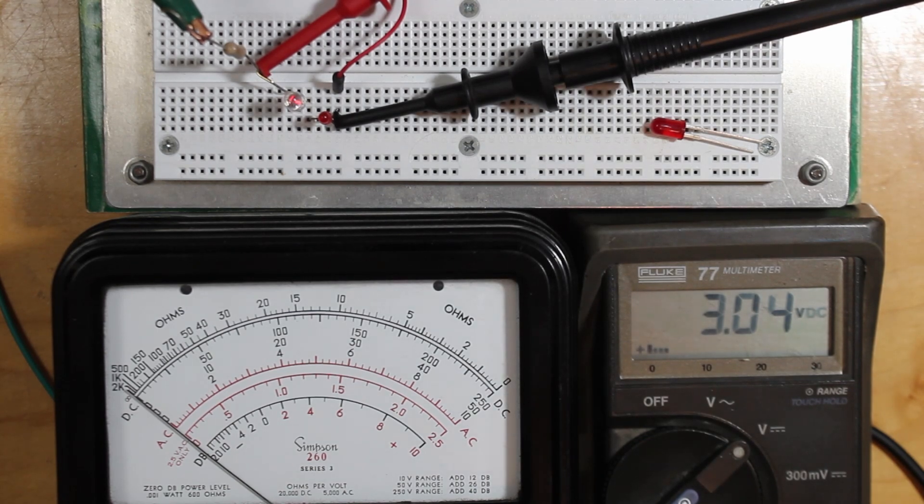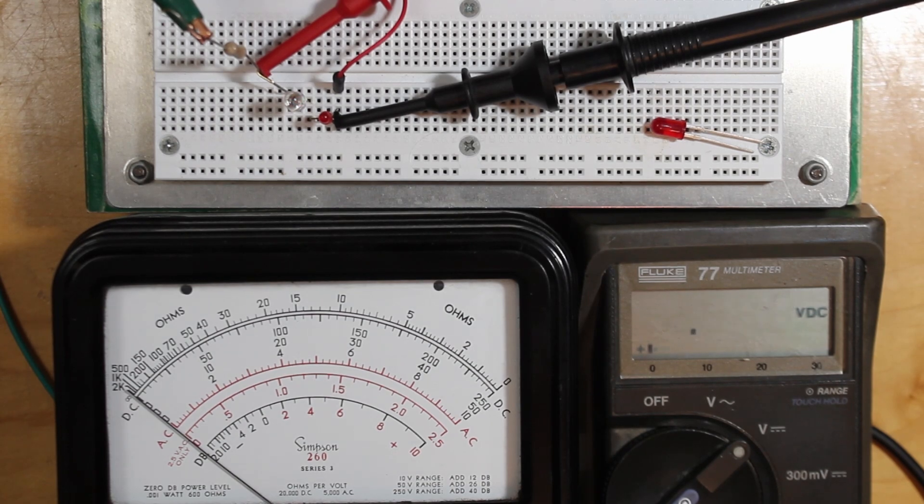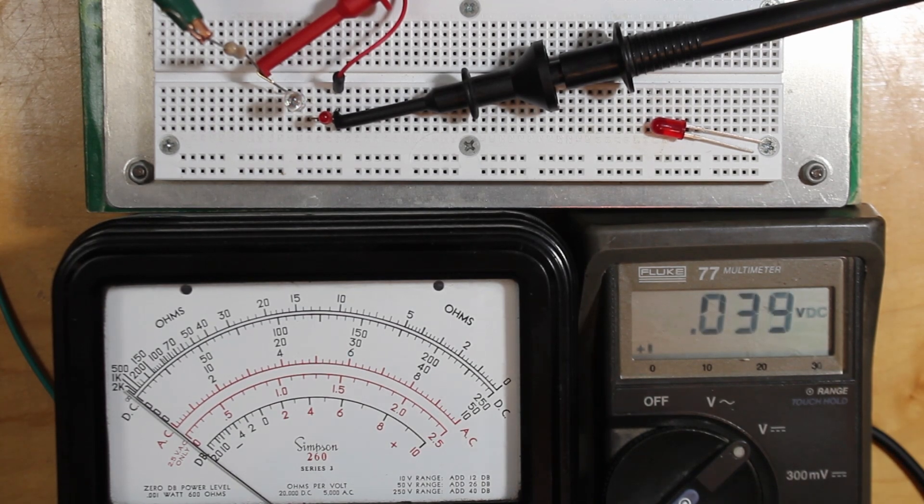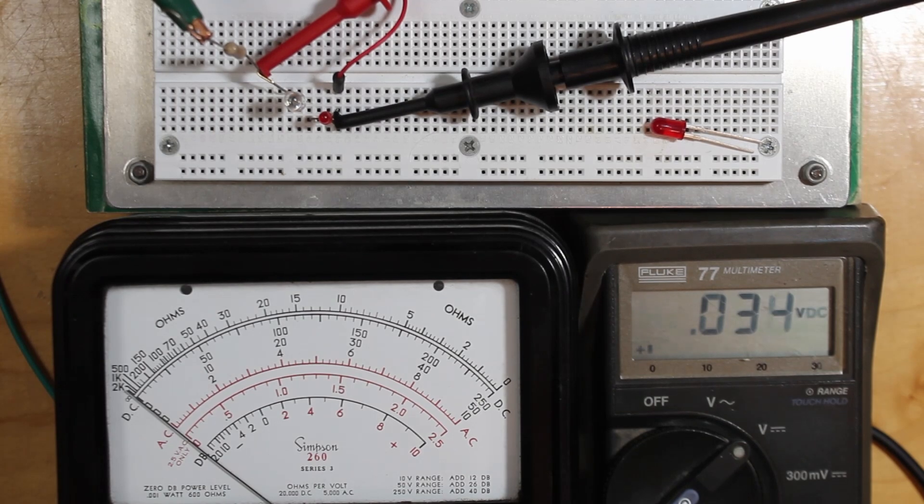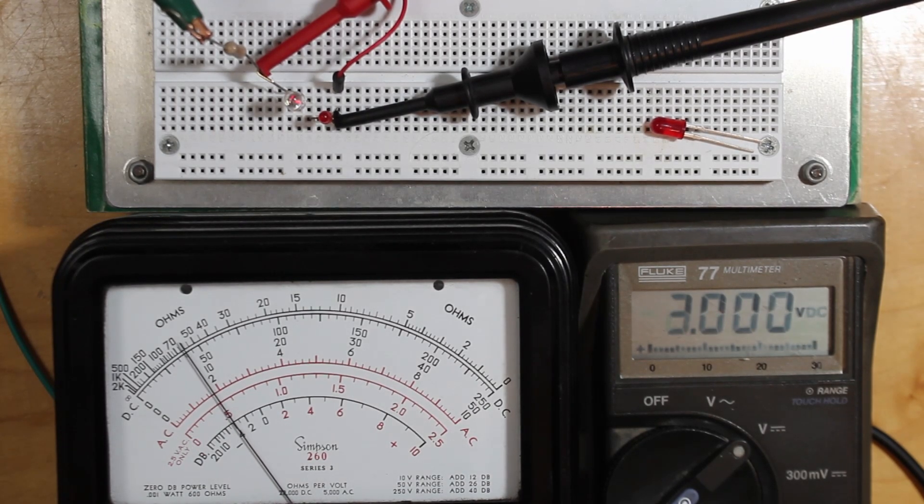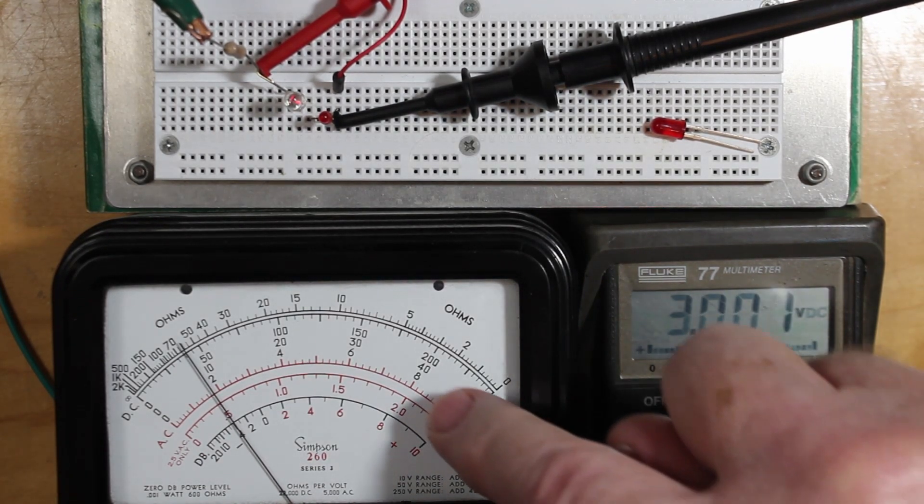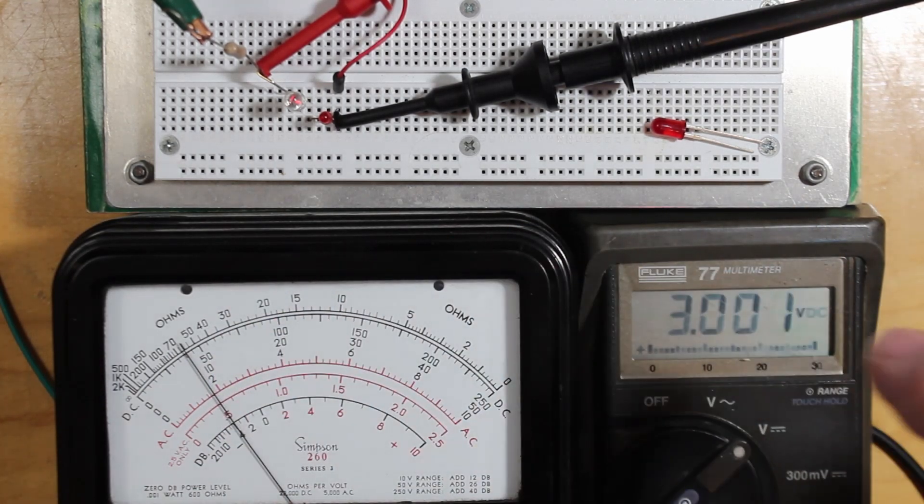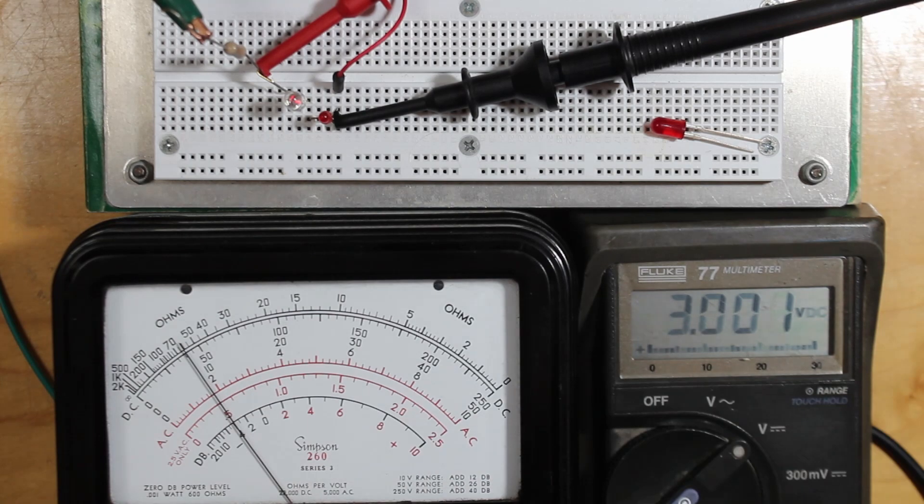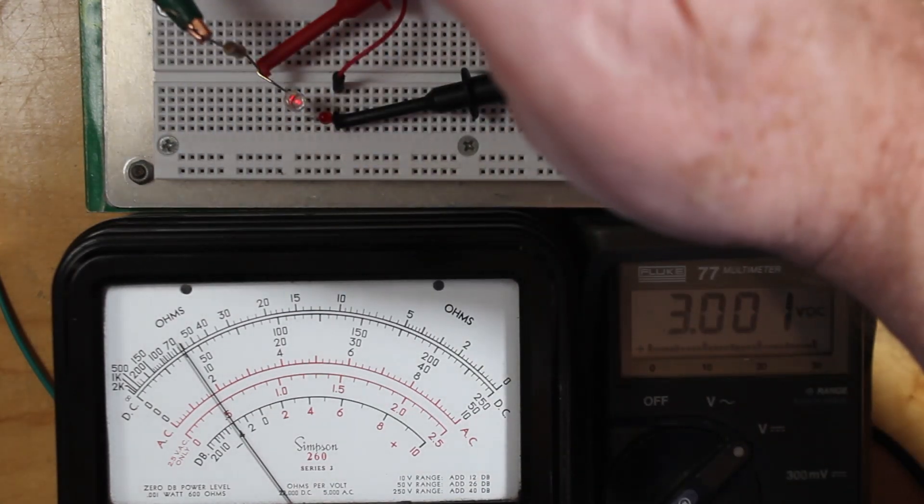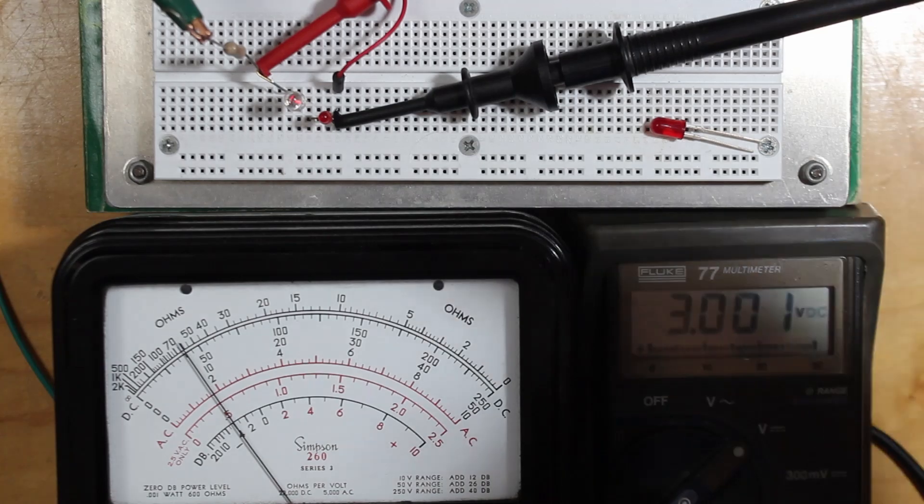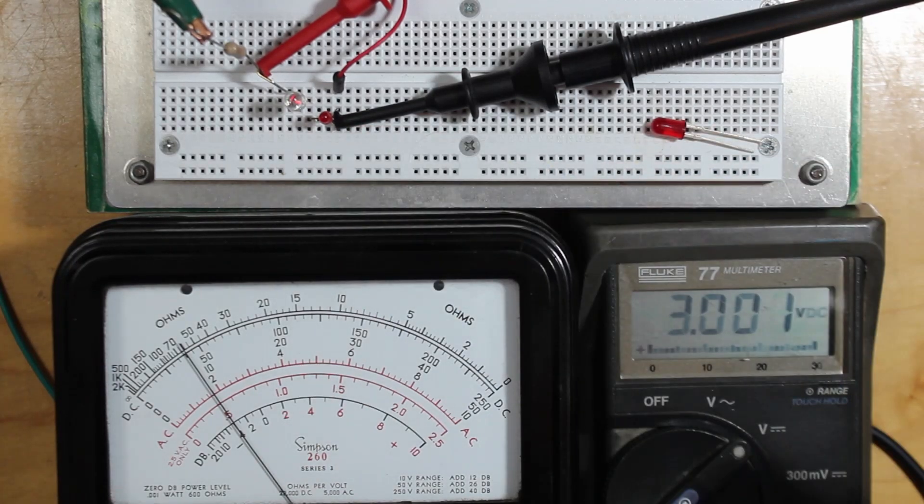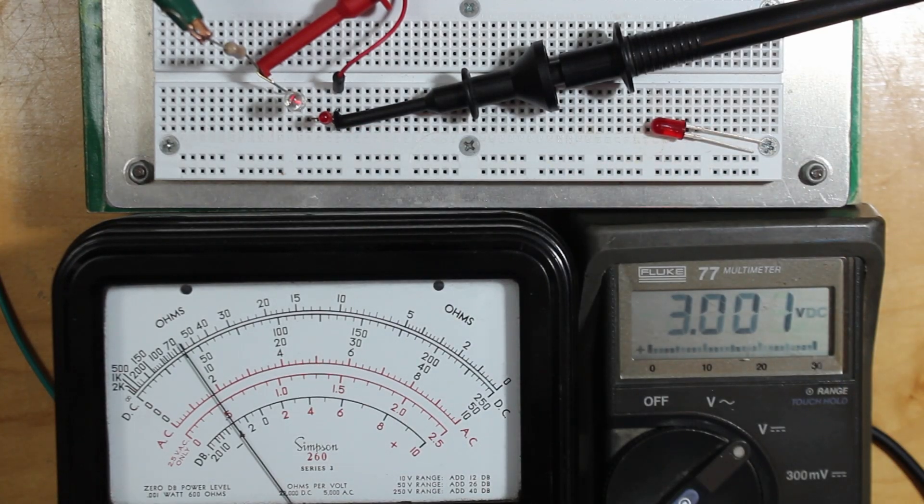So I'm going to move this over to the 50 microamp scale. This old Simpson meter is a beauty. There's 50 microamps, 40, 10... We're running around 8 microamps and this modern LED is starting to light up. The little old guy hasn't even thought about it yet. So quite the difference.